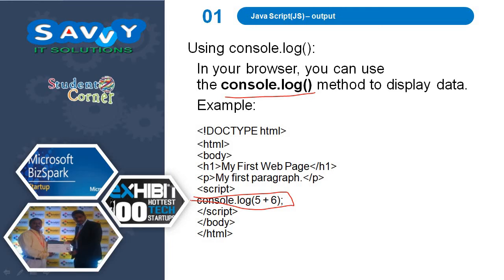Now you understand the basic output statements in JavaScript. Please remember that Java is different and JavaScript is different — both are not at all the same. In the next video I will explain the difference between Java and JavaScript very clearly. There are a lot of differences, but some similarities are also there. We are learning purely JavaScript, not Java.